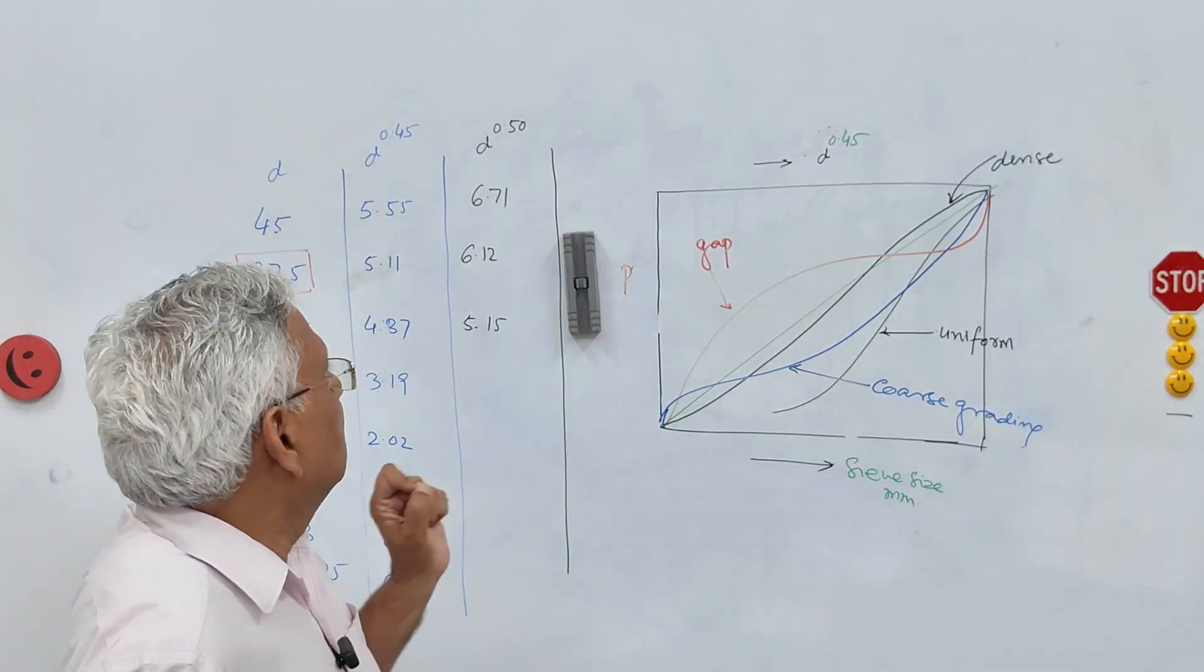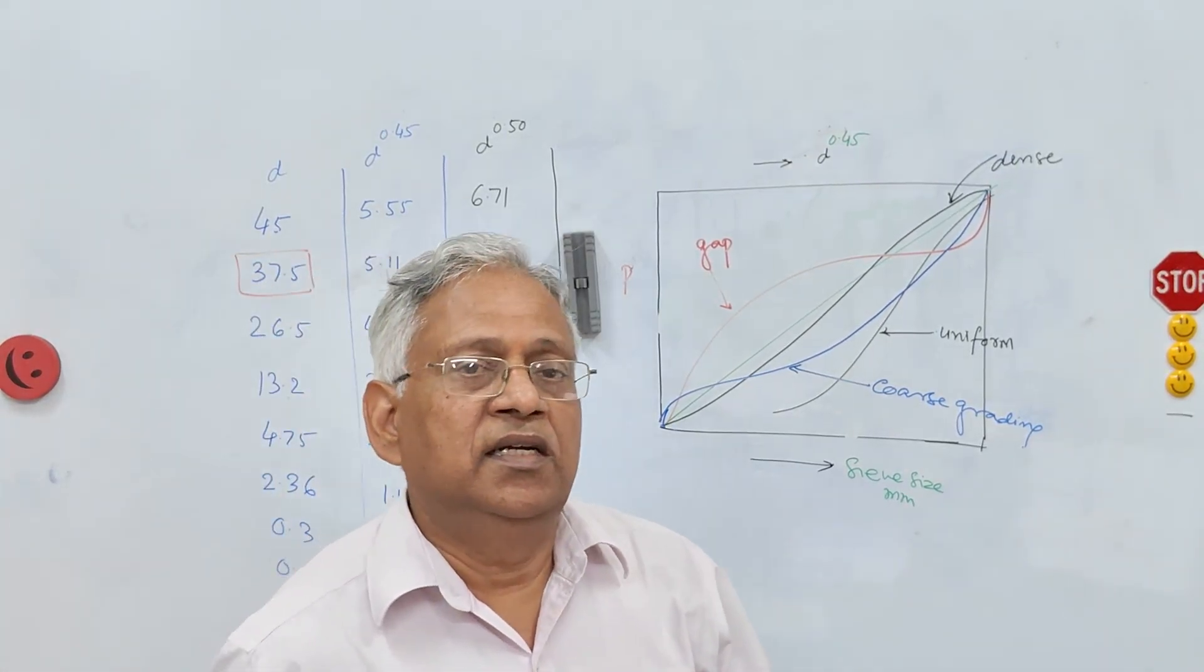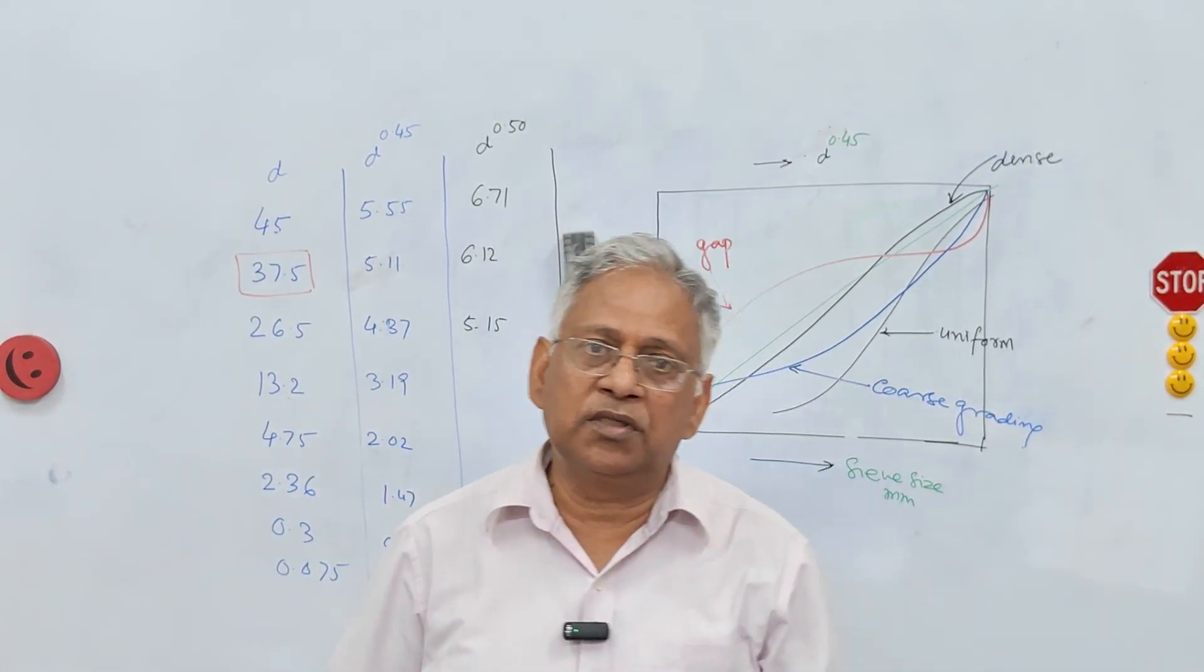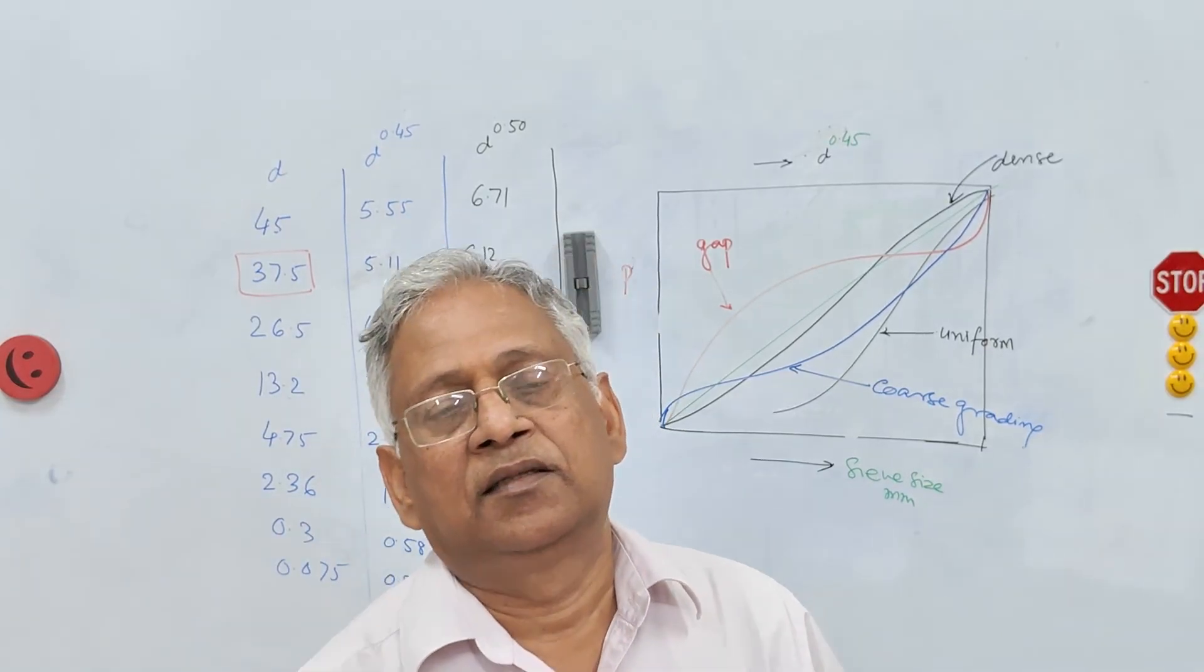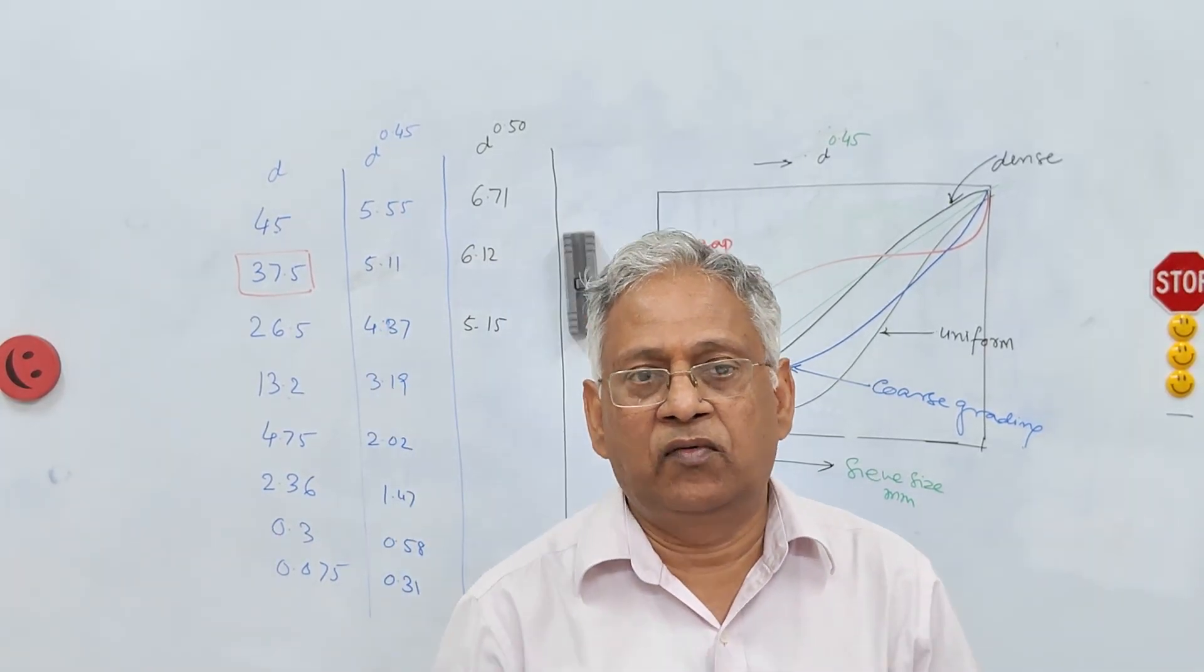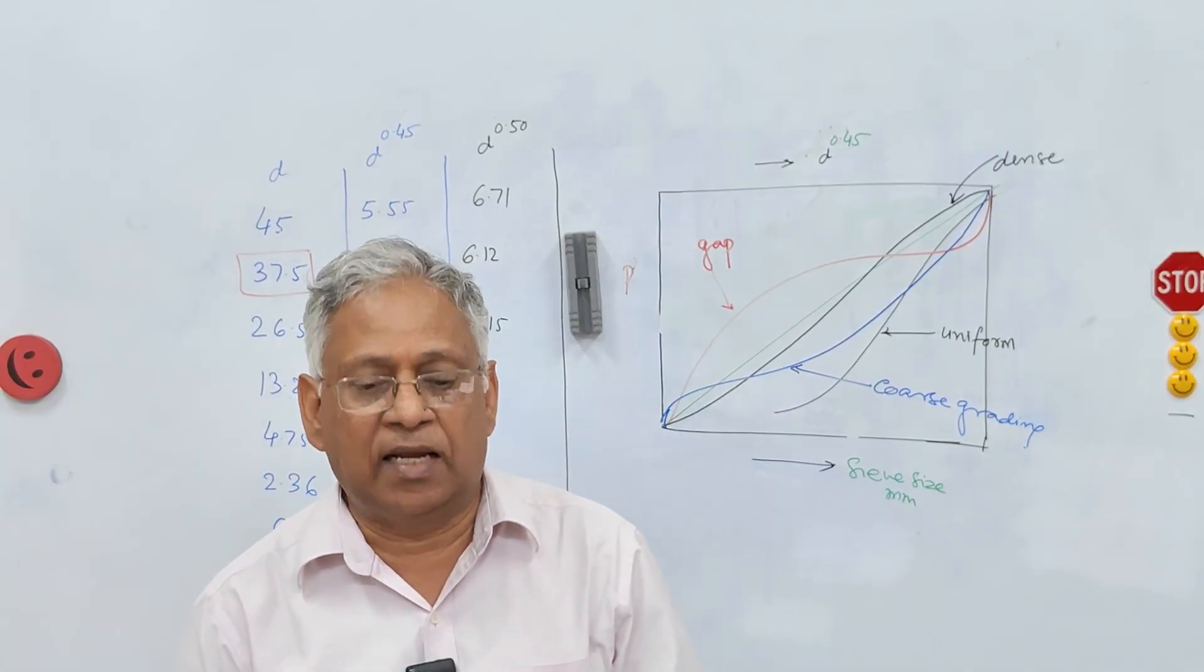You have a number of sieves. And therefore 0.45 is now commonly used in modern asphalt mix design. So friends thank you very much for watching this video. If you have any questions you can write.